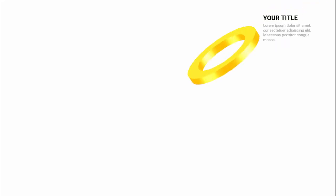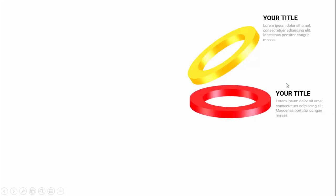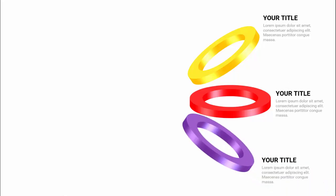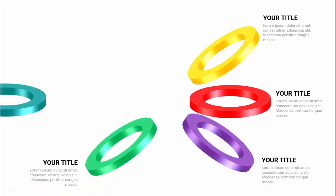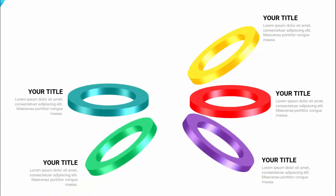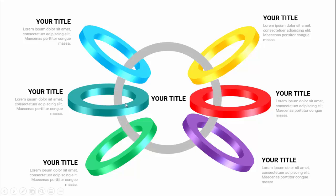In today's tutorial, I'm going to show you how to create a six animated ring options infographic slide in PowerPoint. This is how the slide works: when I click, the first ring comes in with a glossy ring, title, and detailed text. When I click again, the second ring comes with a different color combination, then the third, fourth, fifth, and sixth.